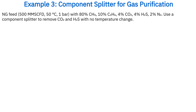Example 3. A natural gas feed of 500 million standard cubic feet per day, at 50 degrees Celsius and one bar, contains 80% methane, 10% ethane, 4% carbon dioxide, 4% hydrogen sulfide, and 2% nitrogen. We will use a component splitter to remove the carbon dioxide and hydrogen sulfide, assuming negligible pressure drop and no change in temperature.